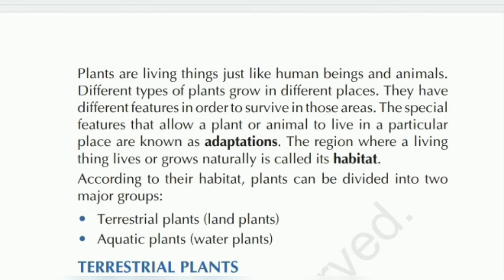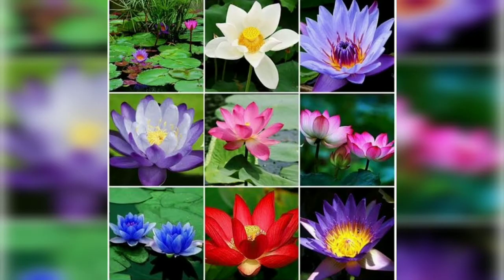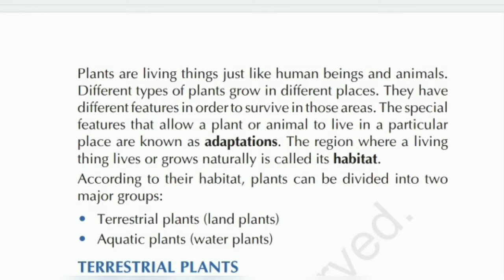So now we are classifying habitats into two types — first one is terrestrial and second is aquatic. Terrestrial plants bhi hote hain aur aquatic plants bhi hote hain. Terrestrial matlab related to land, and aquatic matlab related to water. So terrestrial plants matlab jo plants land mein bade hote hain, zameen mein bade hote hain, that kind of plants are known as terrestrial plants.